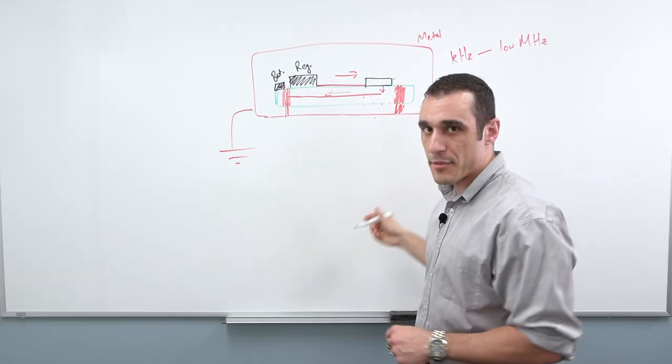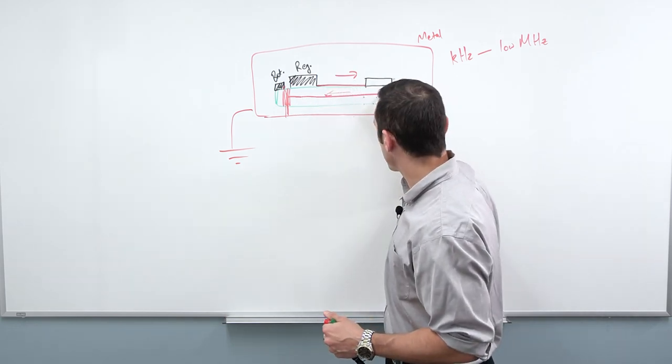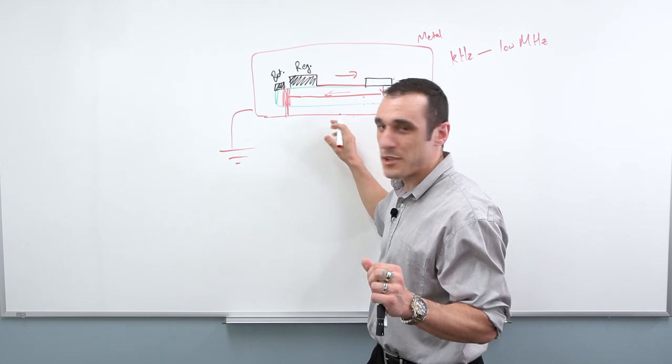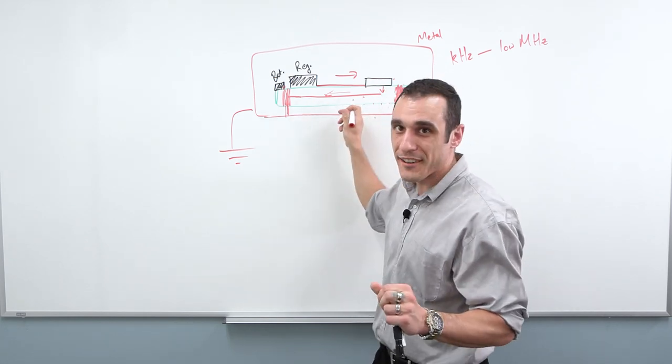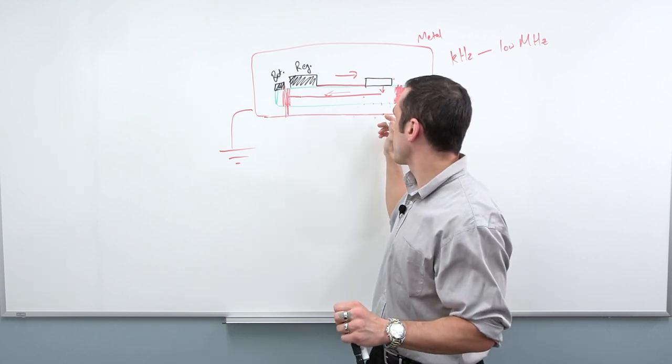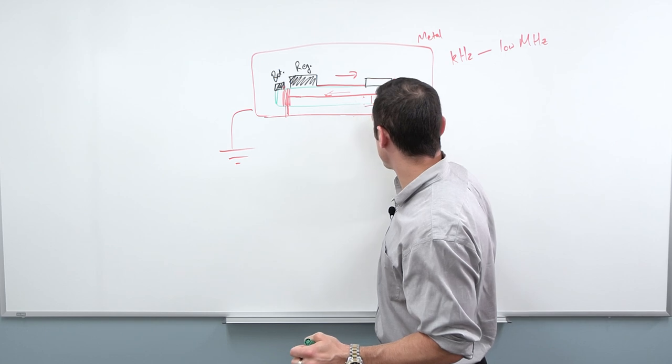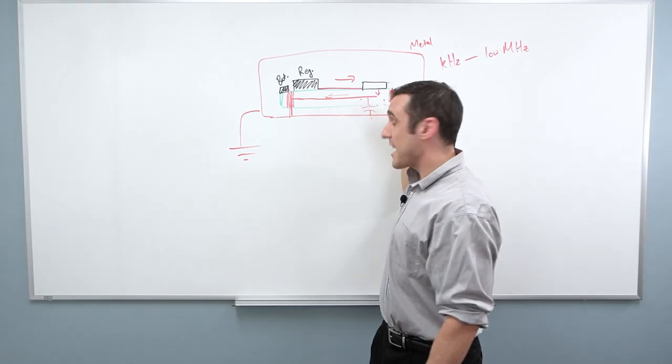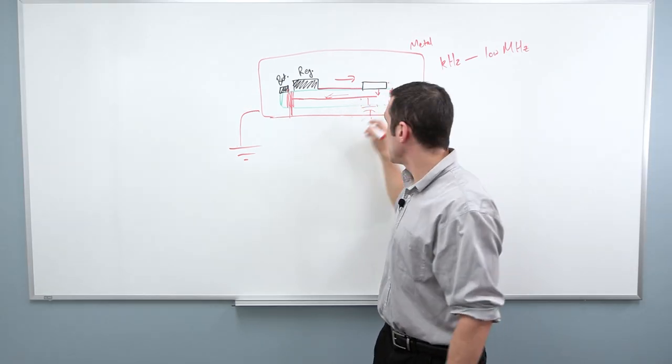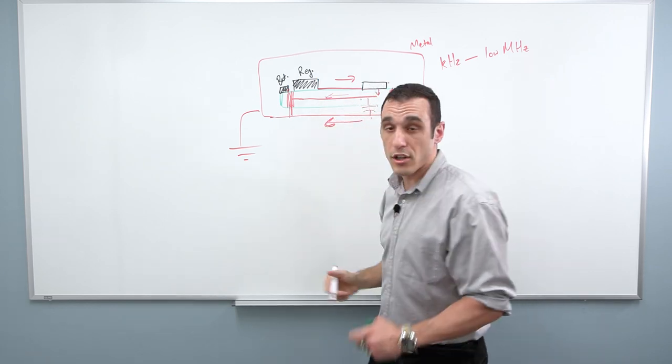There is something that can happen at high current or at high voltage, which is capacitive coupling. So remember, capacitive coupling, we basically have a big piece of metal here separated from another big piece of metal and they're separated by some dielectric. So you've basically created a big capacitor here.